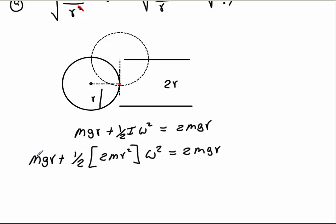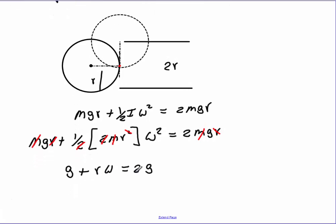We can start canceling things out. We've got mass here, cancel this out, cancel this out. We can also cancel an R here, this one, and this one's gone also. We have G plus R omega squared equals 2G. We move the G to the other side. That leaves us R times omega squared equals G. We divide by R. Omega squared equals G over R. Omega is going to equal the square root of G over R.